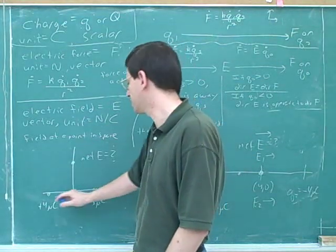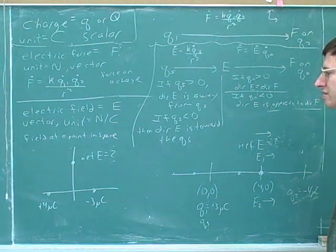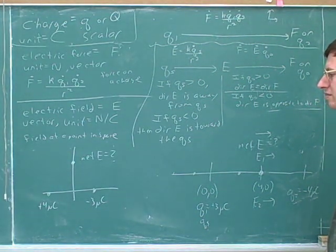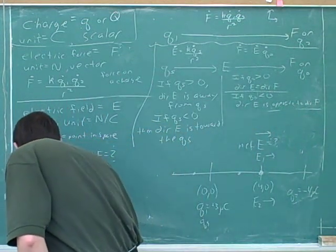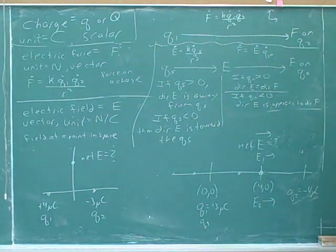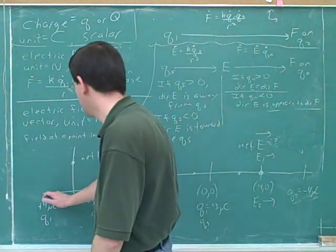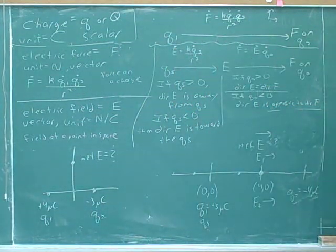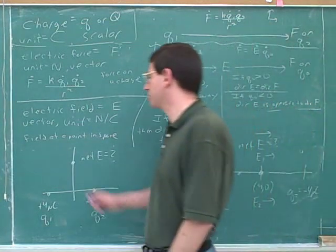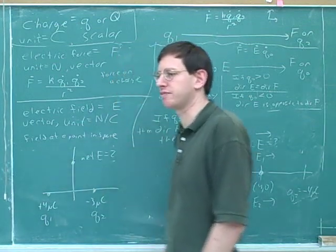How can we figure out the net field at this point from these two charges? We can't figure out the force here because I haven't told you how big the charge is at that point. In fact, for all we know there might be no charge here. So we can't figure out a force, but we can still figure out the field.